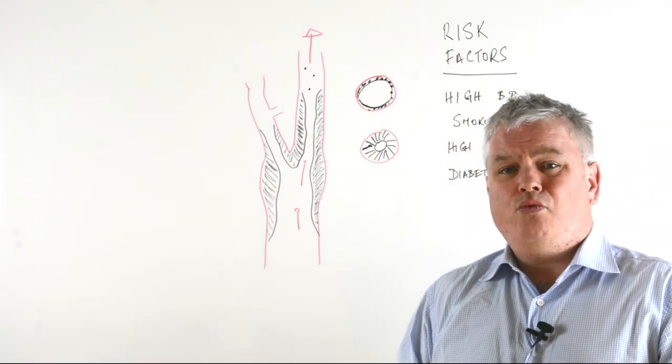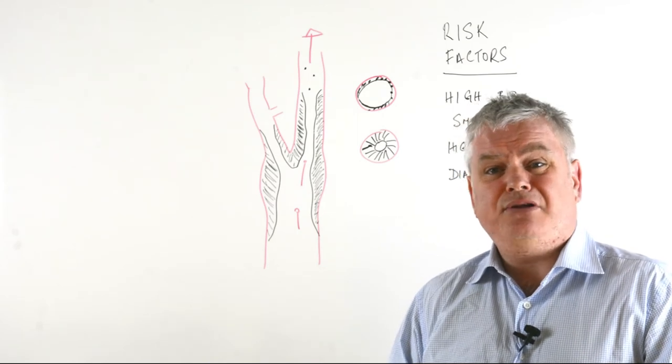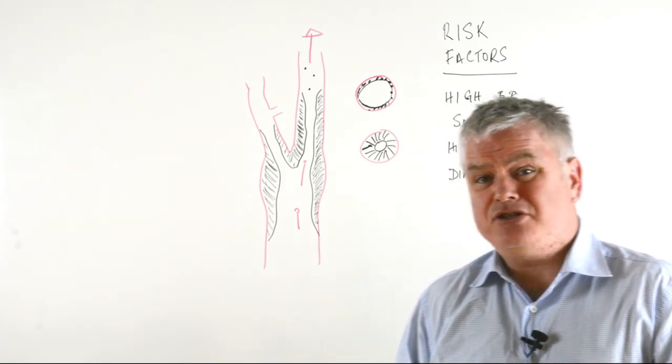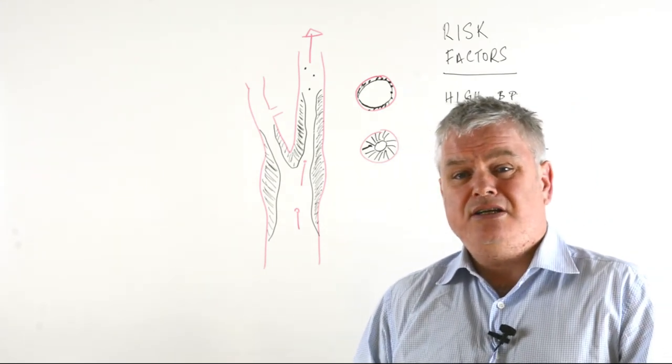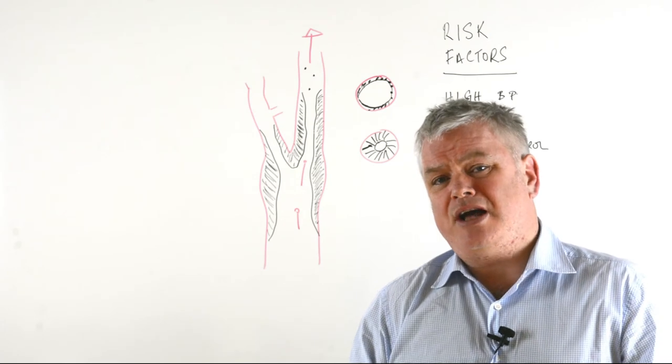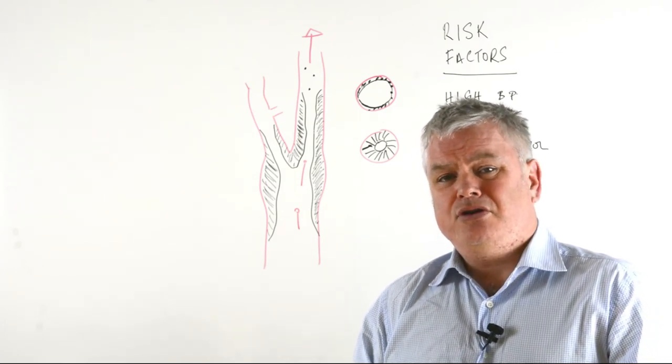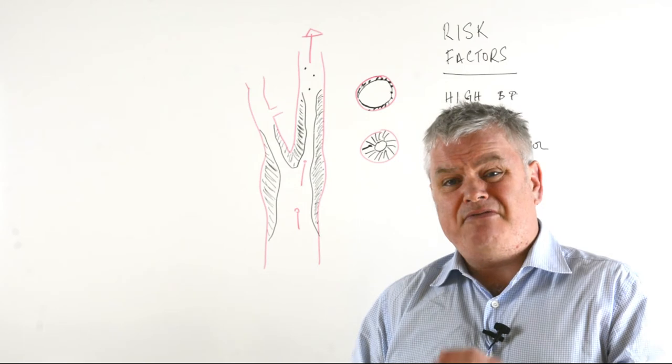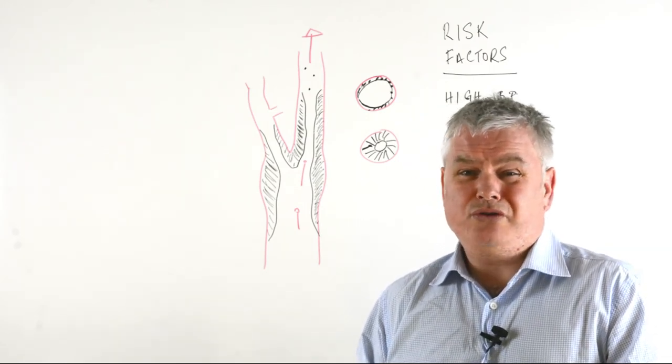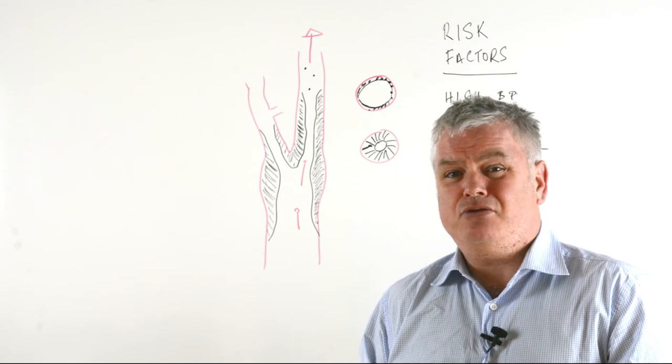Now in addition to the risk factor management, most doctors would tend to add a blood thinning medication such as aspirin, and for the vast majority of patients with carotid disease, sorting out the risk factors and starting the patient on aspirin or a similar type of drug is really all that they need. If however they have a very tight narrowing, then almost certainly some kind of surgical intervention is required.